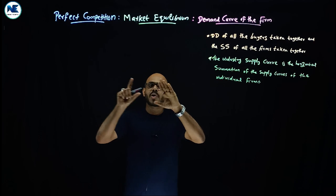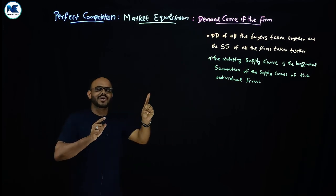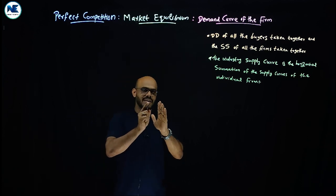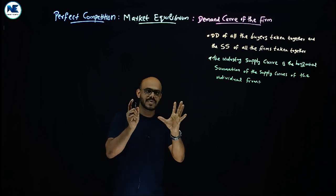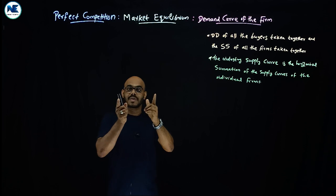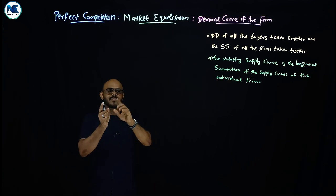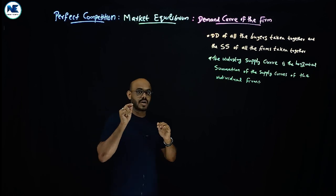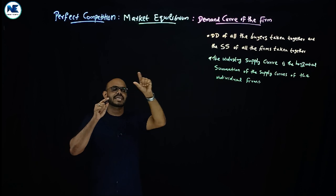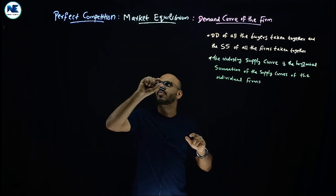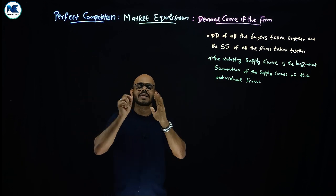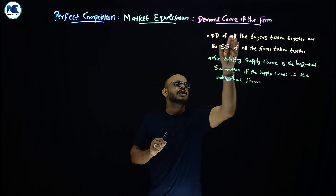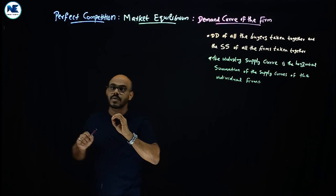Our broad area is microeconomics and the topic is perfect competition. We have covered what a market is, classification of markets, the meaning of perfect competition, and its features or assumptions. Please watch the previous videos. Now the title of this video is: market equilibrium under perfect competition — a diagrammatic representation. This is a very important topic, and we also covered the demand curve of the firm in a previous video.